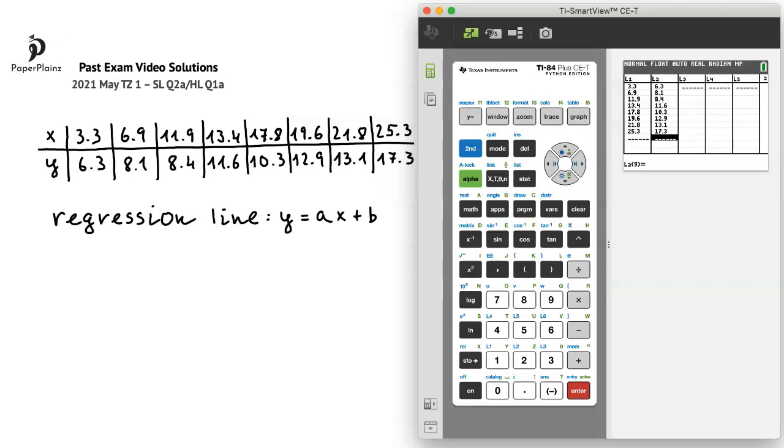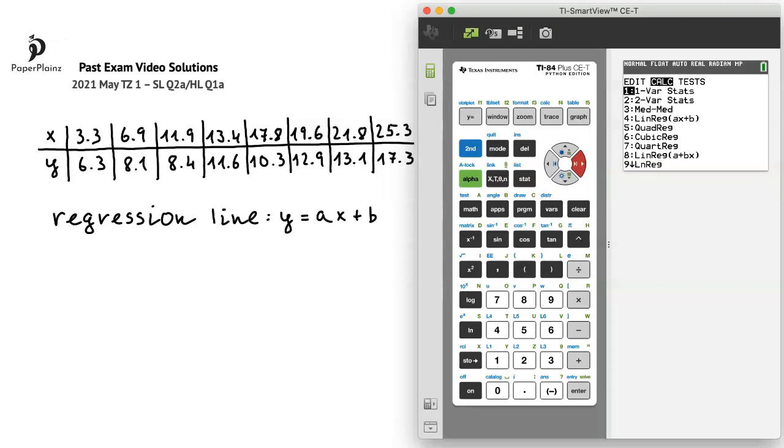Once we have entered our data, we'll press stat again, and then move over to calc. We are looking for the regression line in the form y equals ax plus b, so here we'll choose option 4, linreg ax plus b.